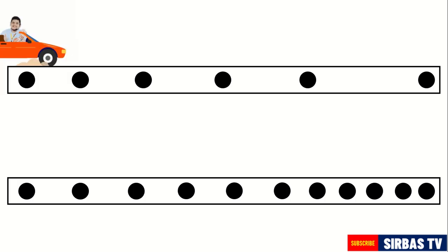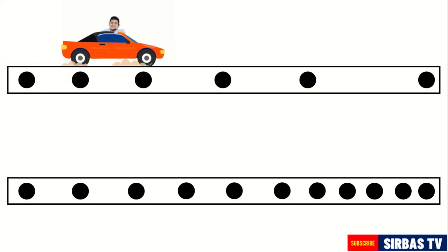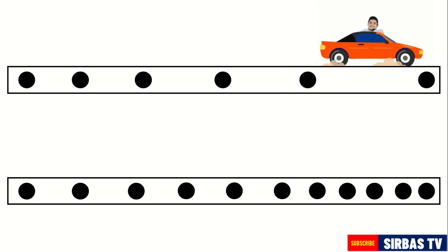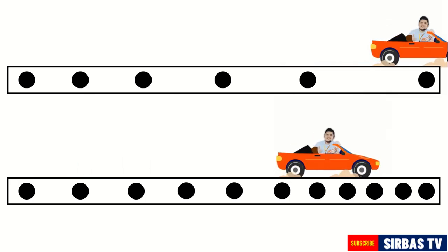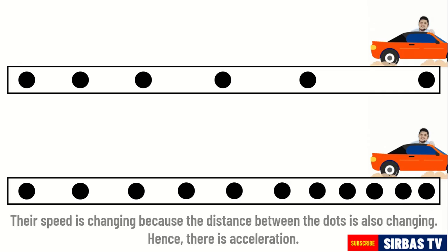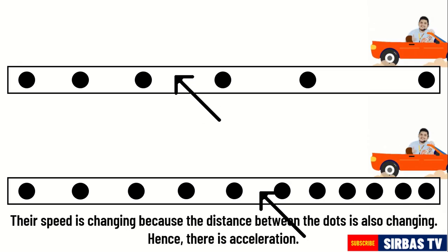Let us have another look on the two dot diagrams. Are the two objects represented on the diagrams accelerating? Yes, they are accelerating since their speed is changing. We stated that their speed is changing because the distance between the dots is also changing.